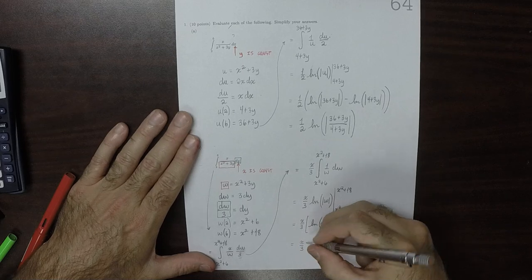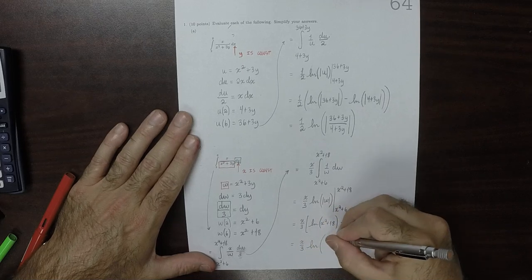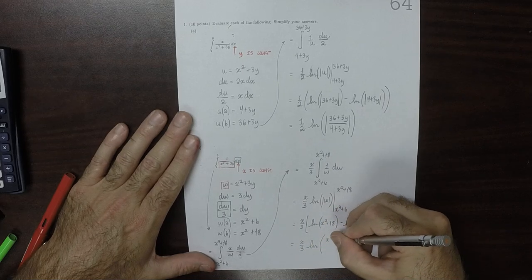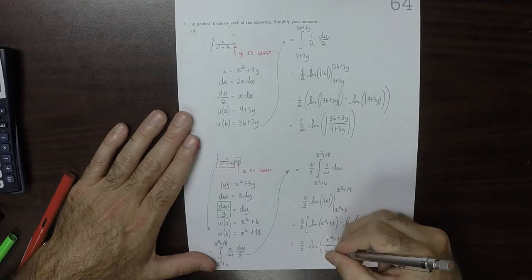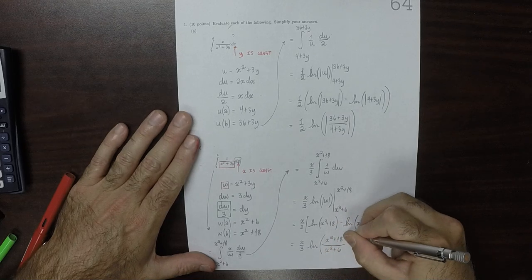So natural log of x squared plus 18 minus the natural log of x squared plus 6. So that would be x over 3, natural log, x squared plus 18 divided by x squared plus 6.